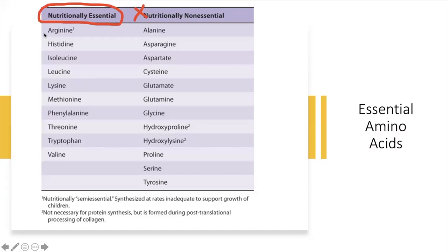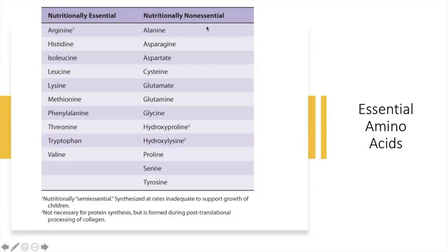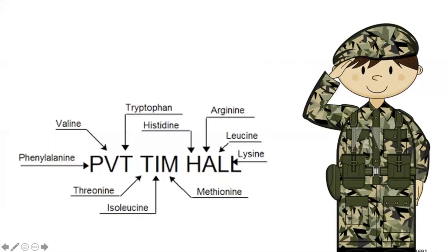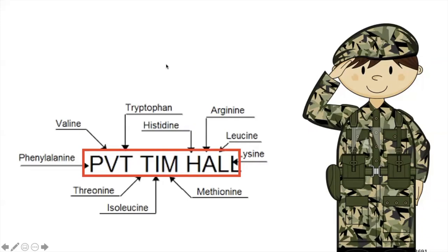Just to run down the essential amino acids: arginine, histidine, isoleucine, leucine, lysine, methionine, phenylalanine, threonine, tryptophan, and valine. The famous mnemonic for memorizing these — it has a military touch — is Private Tim Hall, or Private Matt Hill. For teaching purposes, I'll use Private Tim Hall.